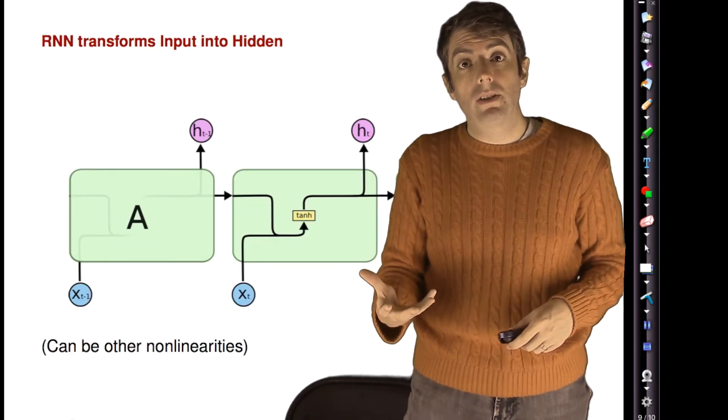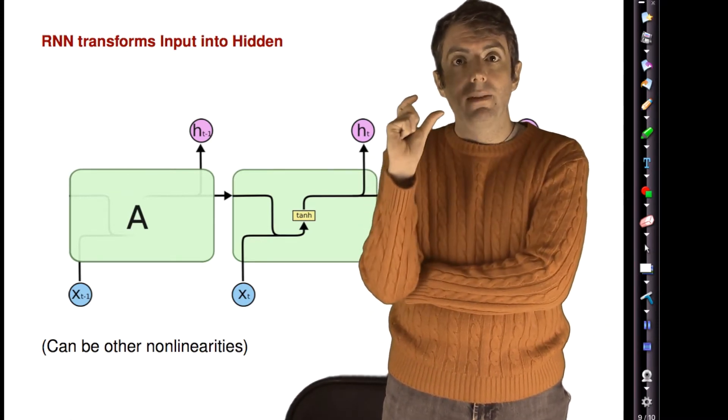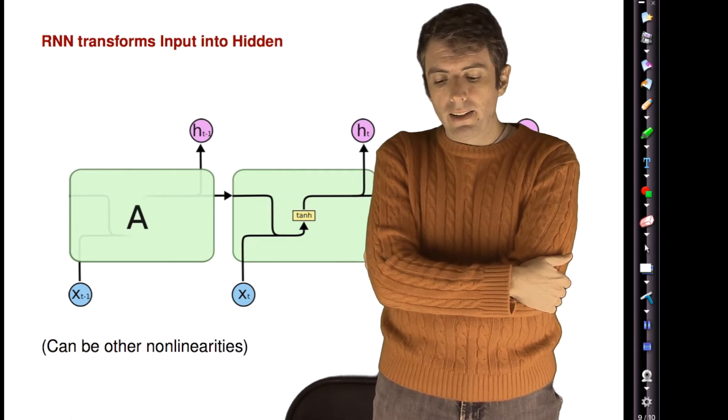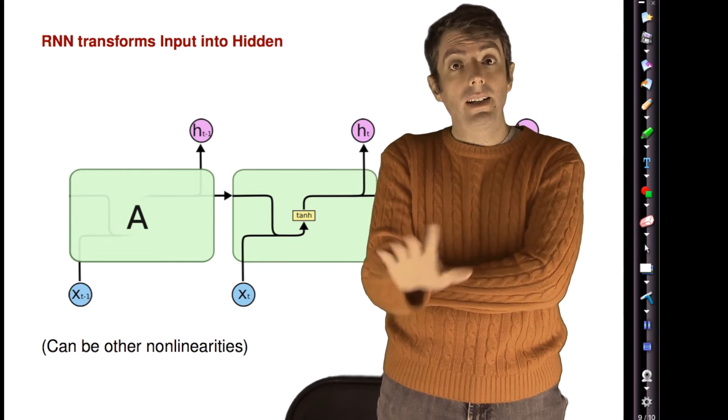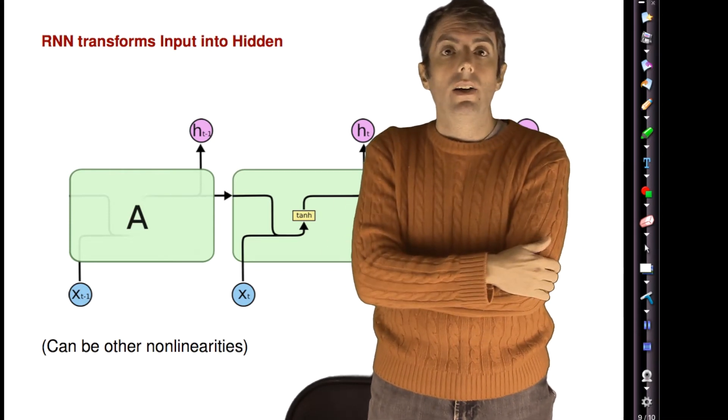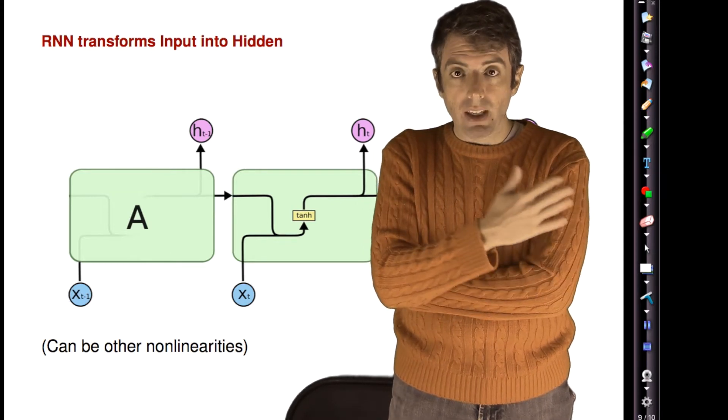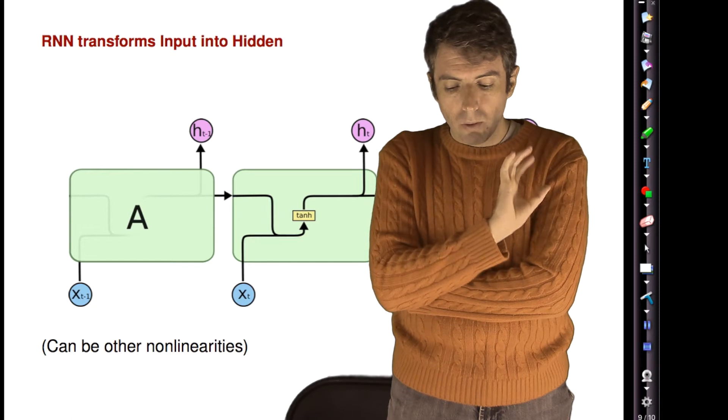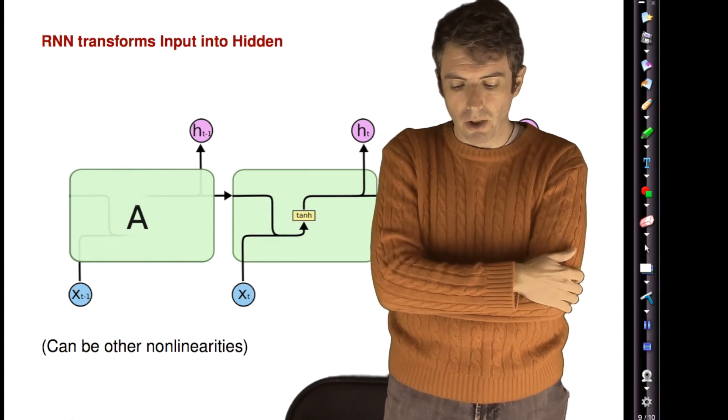Before, when I showed you pictures of the RNN, we had a very specific representation borrowed from Richard Socher that showed the actual vectors. We're now going to take a more cartoony approach for representing these models that show the vectors as circles. We're going to ignore the actual number of dimensions for the moment.